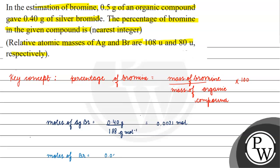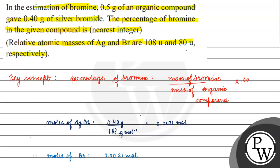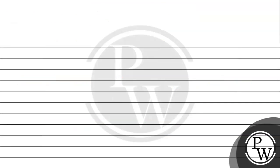Moles of bromine will be 0.0021 moles, because 1 mole of AgBr gives 1 mole of bromine atom. So 0.0021 moles of AgBr gives 0.0021 moles of bromine.